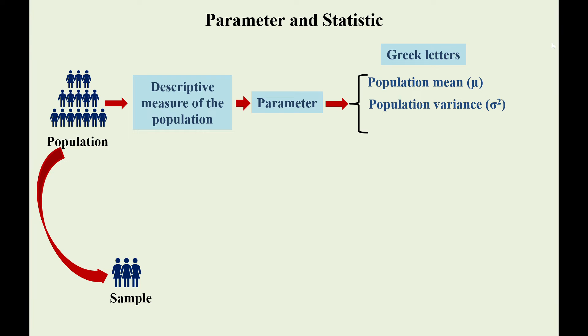population variance sigma squared, and population standard deviation sigma. A descriptive measure of a sample is called a statistic.